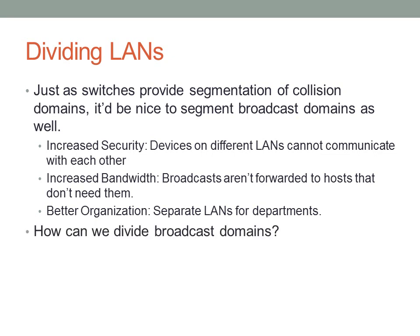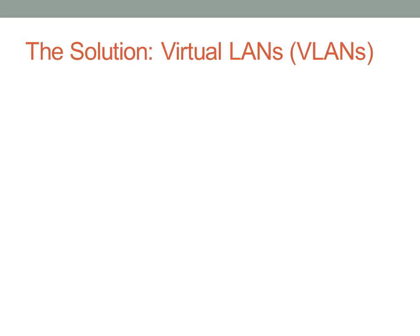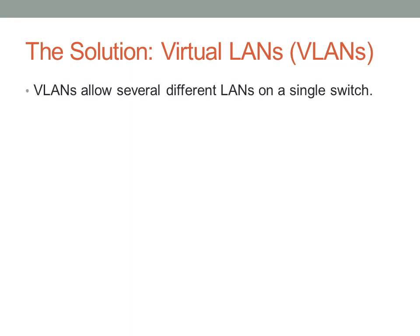We need to figure out a way to divide broadcast domains, and that is effectively what VLANs do. VLANs allow several different LANs on a single switch. On a 24-port switch, I can put the first 8 ports into VLAN 1, the second 8 ports into VLAN 2, and the last 8 ports into VLAN 3. The ports on VLAN 1 would not be able to talk to any devices on VLANs 2 or 3, and the same goes for VLANs 2 and 3.